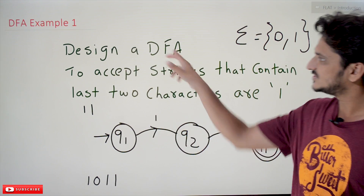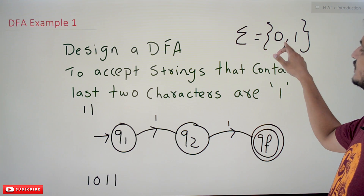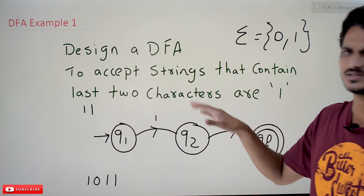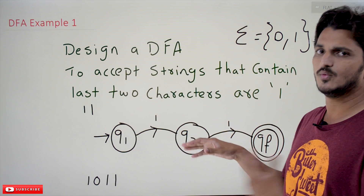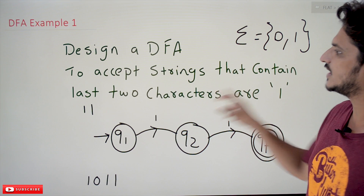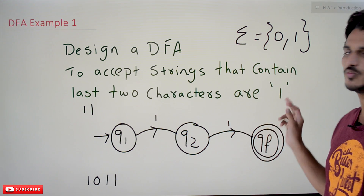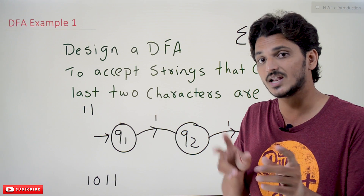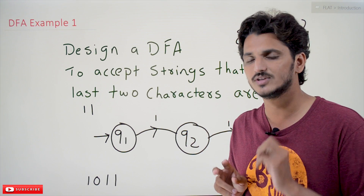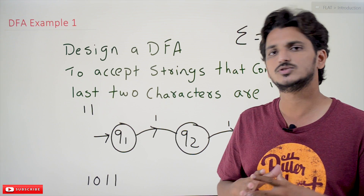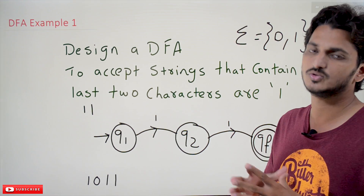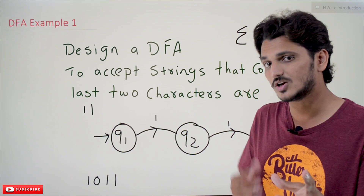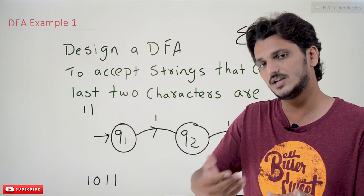Coming to today's example: design a DFA with input symbols 0 and 1. The DFA should accept strings where the last two characters are 1. So if the string contains the last two characters as 1, our DFA should accept it; otherwise, the string should not be accepted. That is the logic we have to construct.